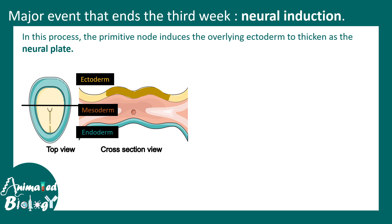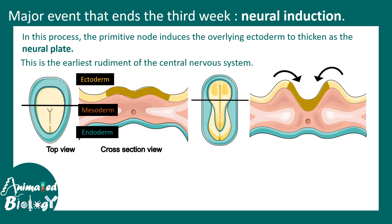The neural tube is actually derived from the ectoderm. The entire nervous system is derived from the ectoderm. The notochord actually induces the ectoderm to become neuroectoderm, and that's the rudimentary nervous system.